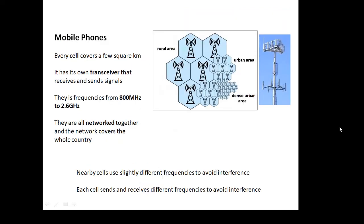Mobile phones are called cellular phones because there's a cell, and each cell has a transceiver which receives and sends signals. The whole country is covered in lots and lots of cells. The more populated an area is, the closer the cells will be together. Mobile phones use a range of frequencies from 800 megahertz (0.8 gigahertz) up to 2.6 gigahertz — very much microwaves. They are all networked together to cover the whole country, and each cell uses different frequencies to avoid interference.